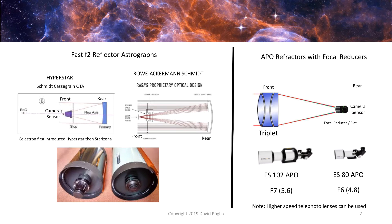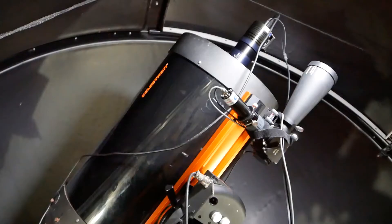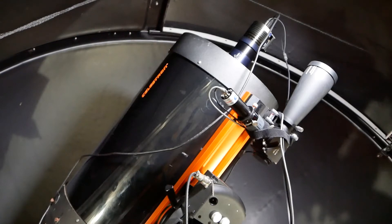Let's hop over into the observatory and take a look at the scopes. Our first look at the two different types of telescopes is the fast F2 reflector astrograph.